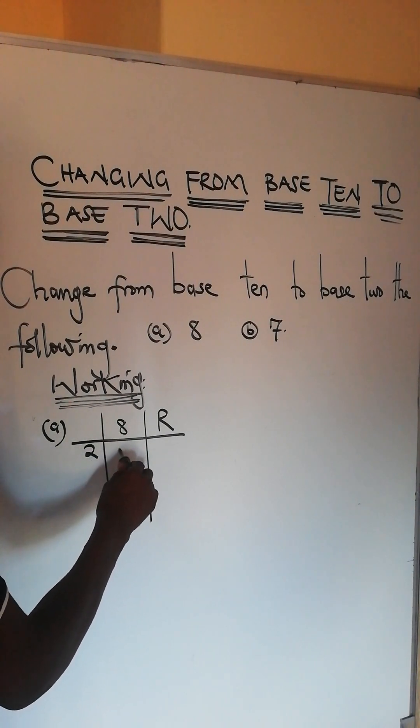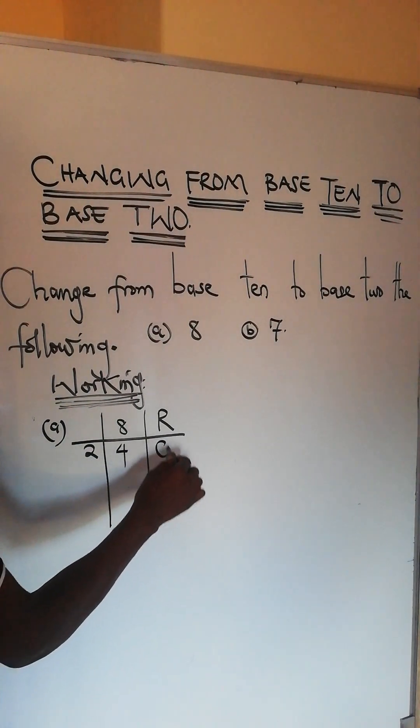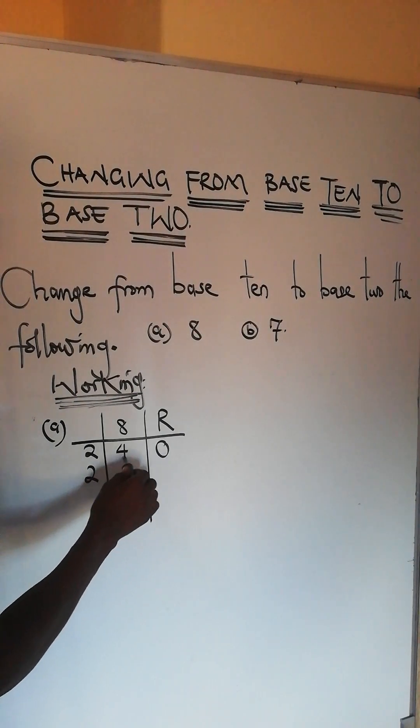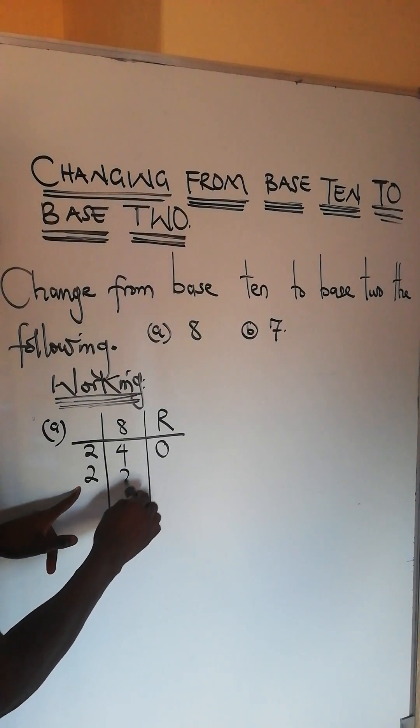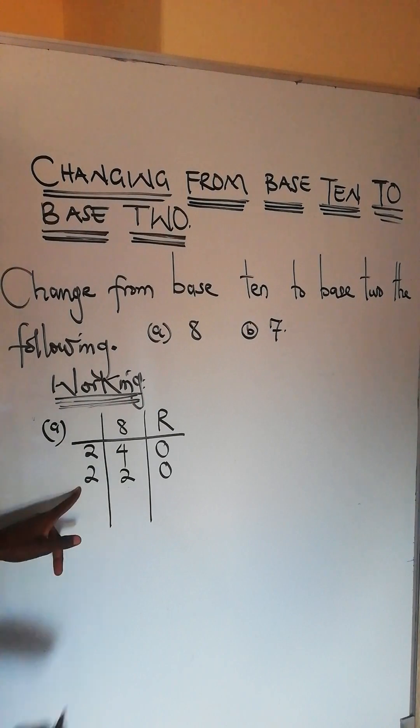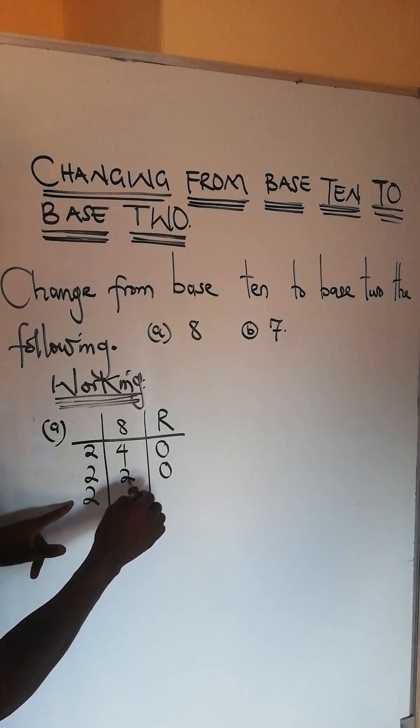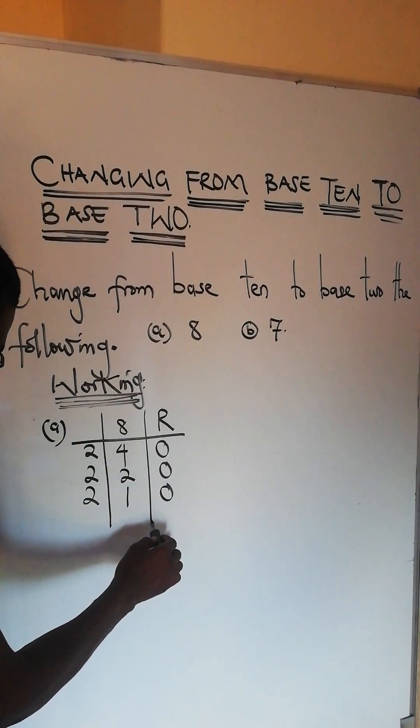8 divided by 2 you get 4 and the remainder is 0. Then you divide this 4 by 2 you get 2 and the remainder is 0.